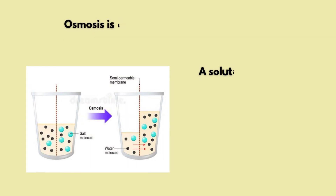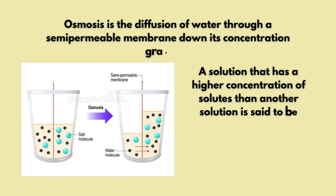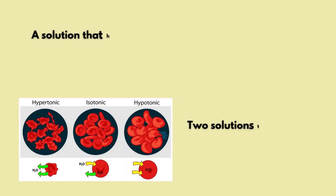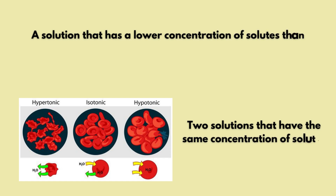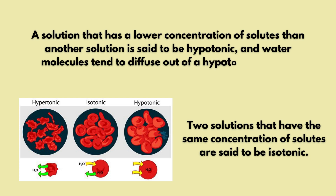Next is osmosis. Osmosis is the diffusion of water across a semi-permeable membrane. In osmosis, there are three types: hypertonic, isotonic, and hypotonic. In an isotonic situation, the concentration is equal on both sides and the cell remains in its normal size. In a hypotonic environment, there is a low concentration of solutes outside the cell, causing water to enter. In a hypertonic environment, the cell will shrink. Diffusion happens because of the concentration gradient.